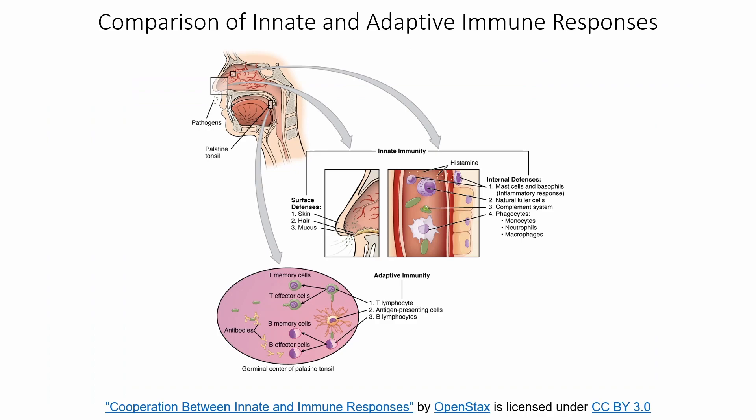Comparing innate and adaptive: innate responses don't care what the pathogen is — virus, bacteria, it doesn't matter. If it's not supposed to be there, innate responses handle it. Your skin blocks out all sorts of bacteria; mucus and hair can trap all sorts of debris. Internally, we have basophils and mast cells, natural killer cells, neutrophils, monocytes, and macrophages that engulf and destroy pathogens regardless of type. We also have the complement system, which basically punches holes in the pathogen like in a bacterial cell. All of these kick in immediately or very fast.